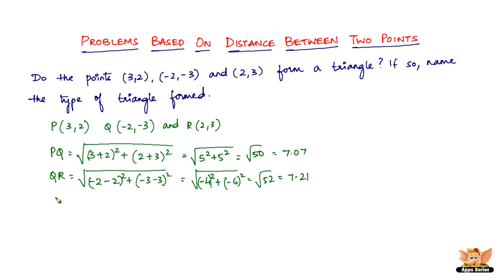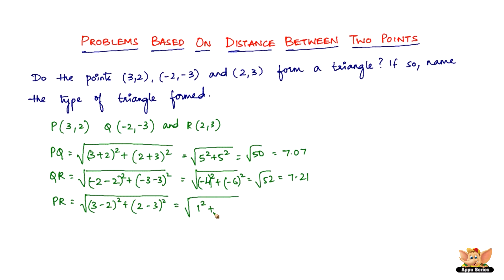Then we've got PR. PR is the square root of (3 - 2)² plus (2 - 3)², which is equal to square root of 1² plus (-1)², which is square root of 2, approximately equal to 1.41.